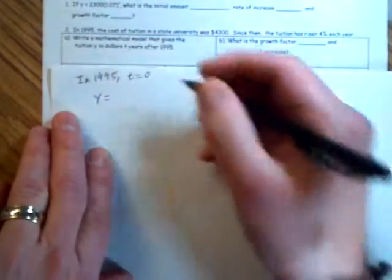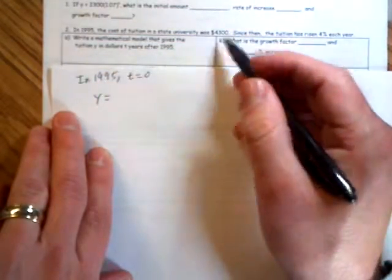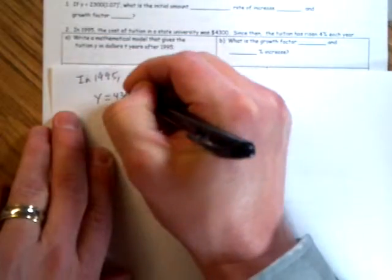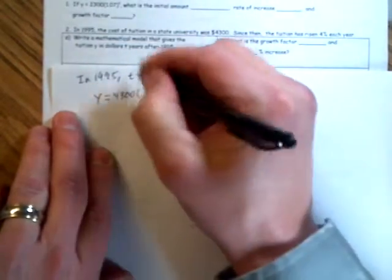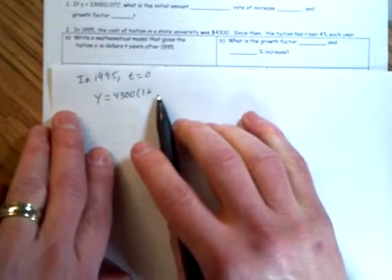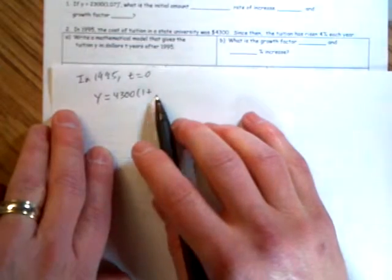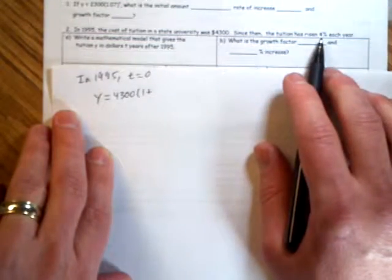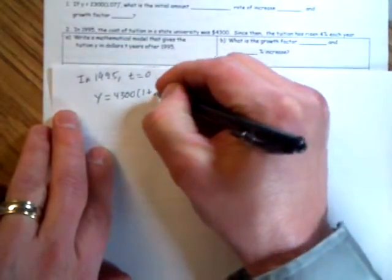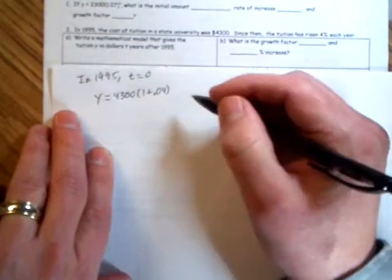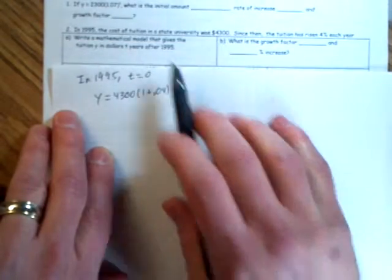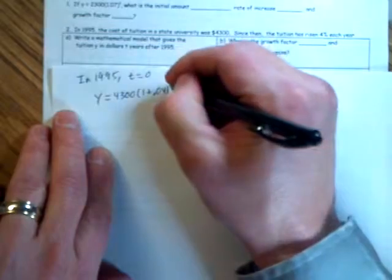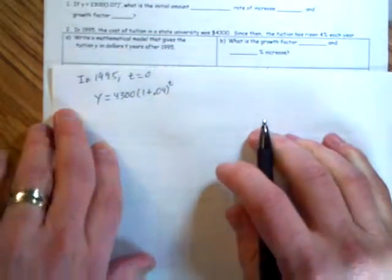Starting with y equals, the initial amount is $4,300. Then you have 1 plus the annual interest rate, or annual increase. It says 4%, which should be interpreted as a decimal, 0.04. And then using the formula provided above, you raise that to the t. So that's the formula.